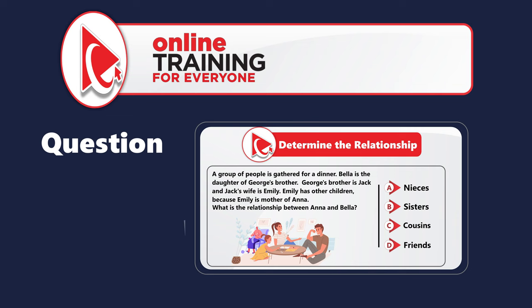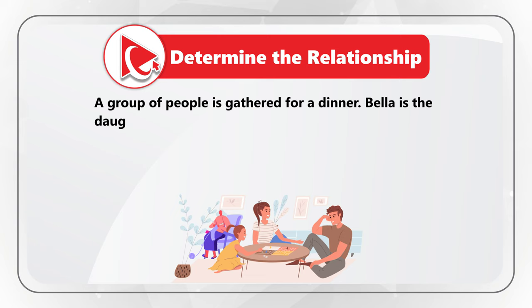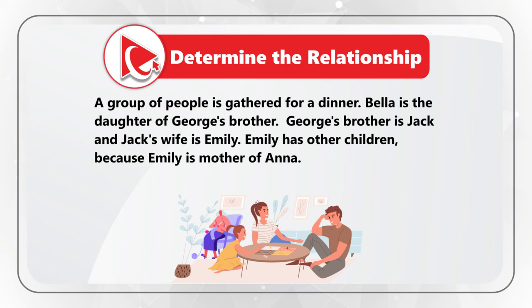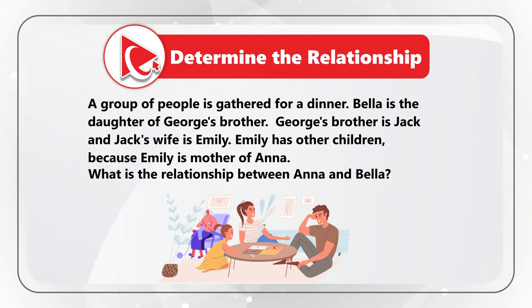Here is the family relationship question, which tests your memory and analytical skills. A group of people is gathered for a dinner. Bella is a daughter of George's brother. George's brother is Jack, and Jack's wife is Emily. Emily has other children because Emily is also a mother of Anna. What is the relationship between Anna and Bella?